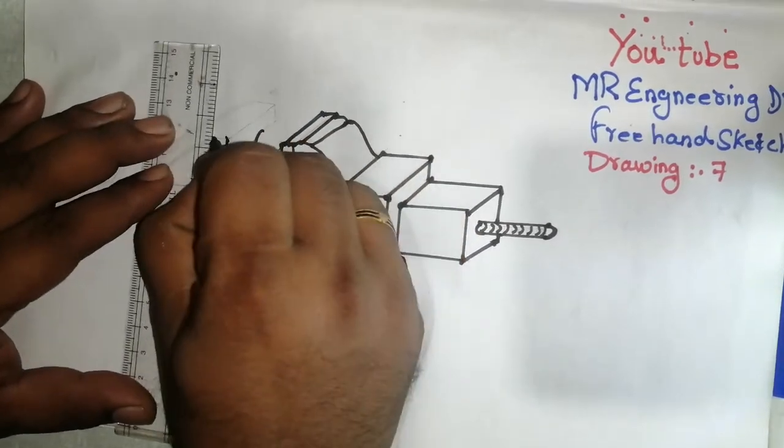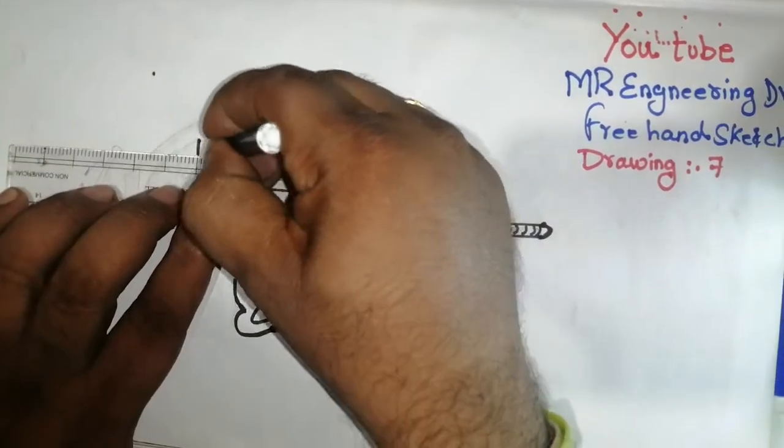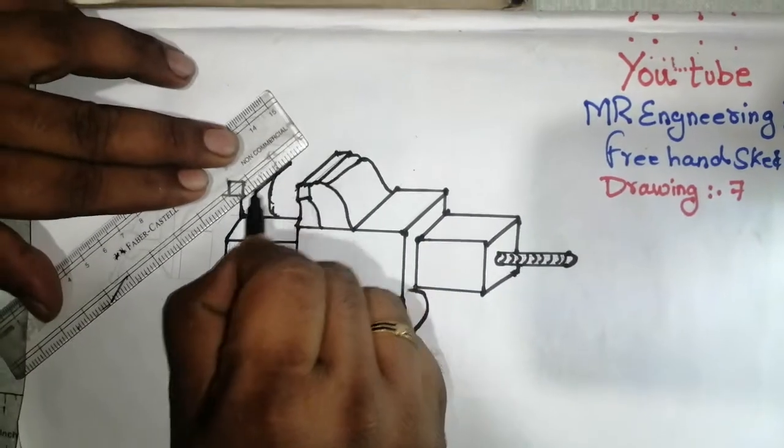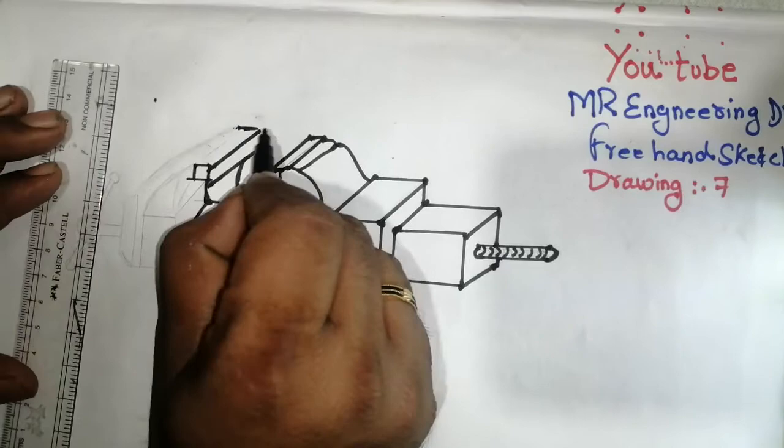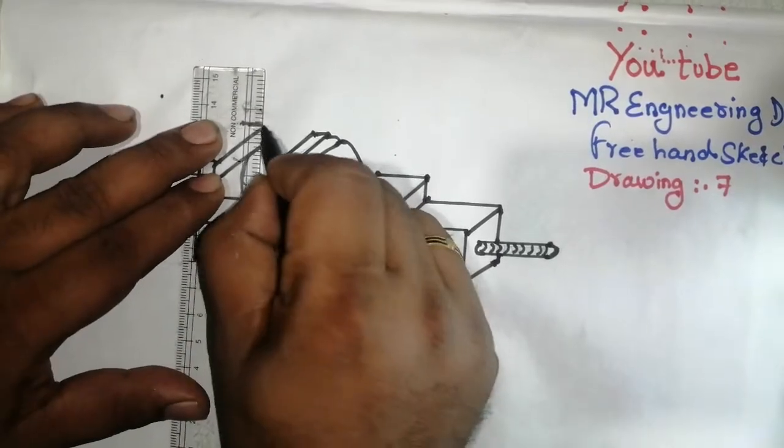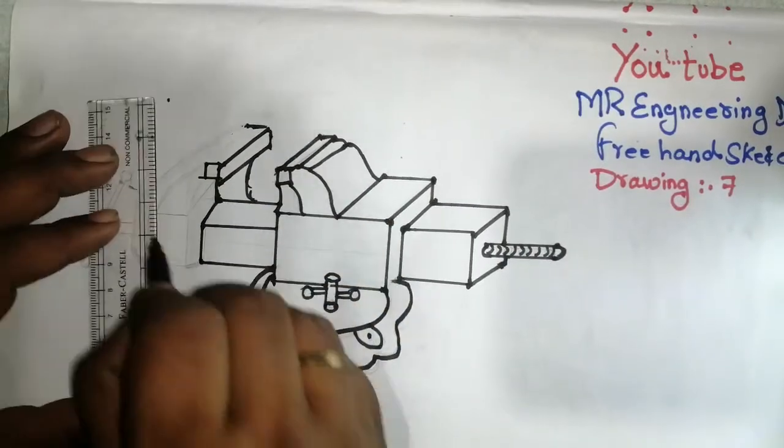Then draw one more square, then take a slant line. After watching the full video, then you put likes and comments.